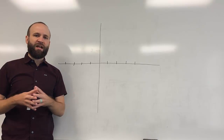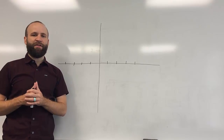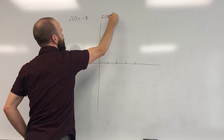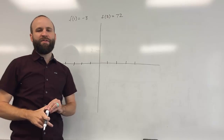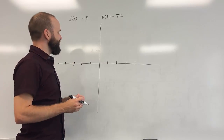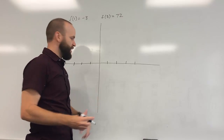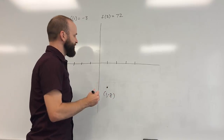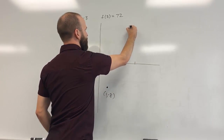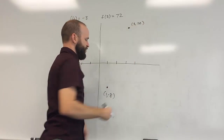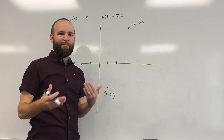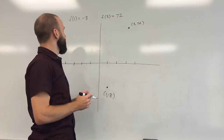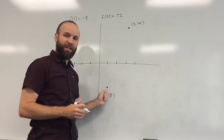Just for a quick illustration of the idea behind the Intermediate Value Theorem: we found f of 1 was −8 and f of 3 was 72. Think about what that means graphically. If f of 1 is −8, the point (1, −8) is on my graph — somewhere down below the x-axis. If f of 3 is 72, the point (3, 72) is somewhere above. If we find two values that have opposite sign, that means we have two points on opposite sides of the x-axis.